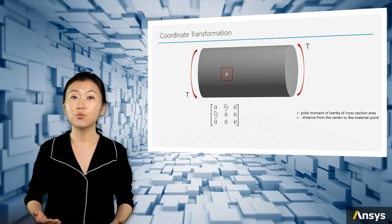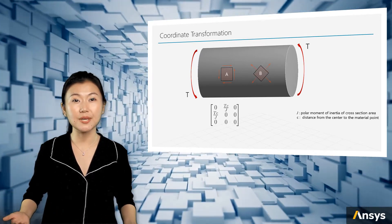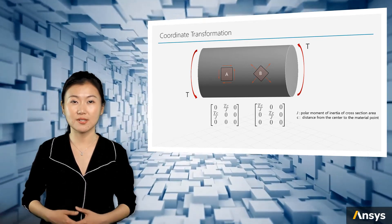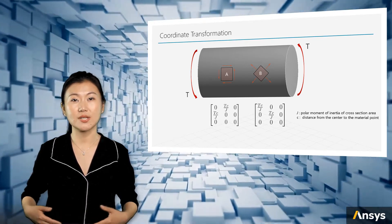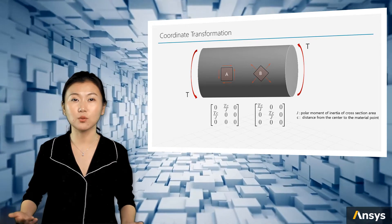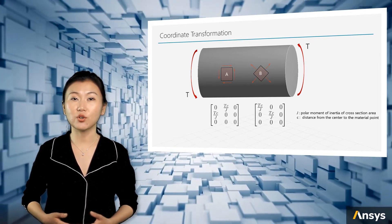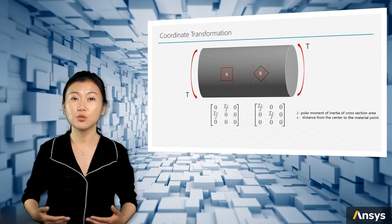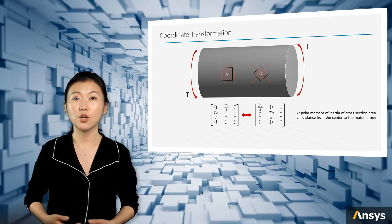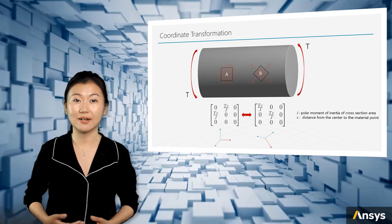However, if we rotate the cube by 45 degrees and reach position B, the shear forces on the cube will be transformed to normal forces. The stress tensor will only have components for the normal x and y directions. These two tensors, although they look very different, are representing the same stress state of the chosen material point. The only difference between them is the coordinate systems they are in.